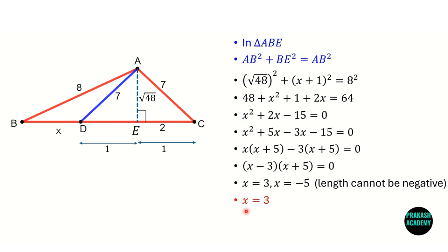So x = 3 is the solution. This means length BD is equal to 3 units. I hope you enjoyed this problem. If you liked this video, please share it with your friends, like and subscribe to my channel. Thank you.